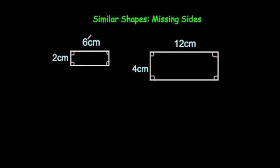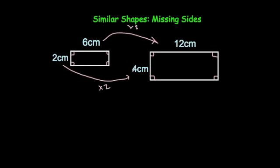You'll notice that the sides, if you multiply the lengths by 2, you will go from 6 to 12. And likewise, if you multiply the widths by 2, you will go from 2 to 4. So this shape has been enlarged by scale factor 2. To get from A to B, you would enlarge A by scale factor 2.